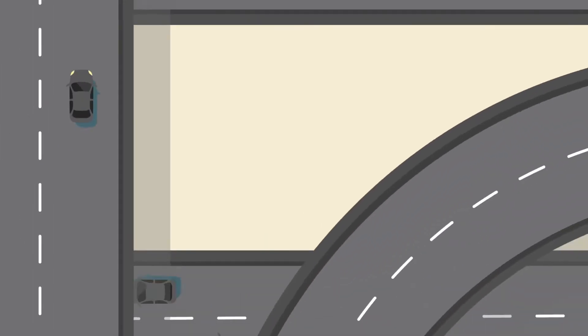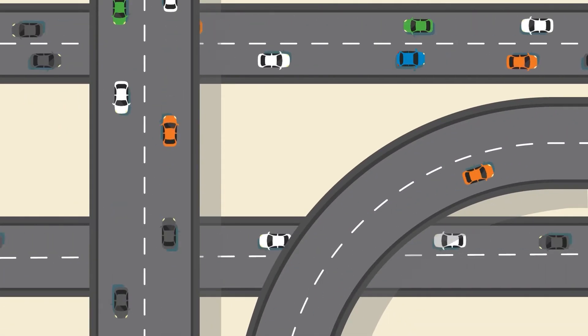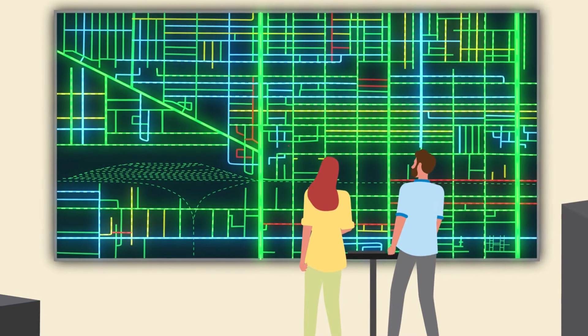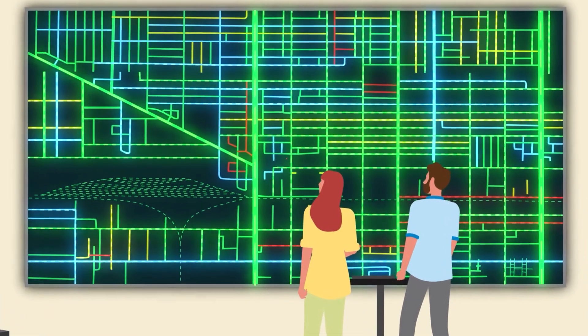The electric grid is like a network of streets, but rather than cars, electricity flows through interconnected lines to reach its destination.